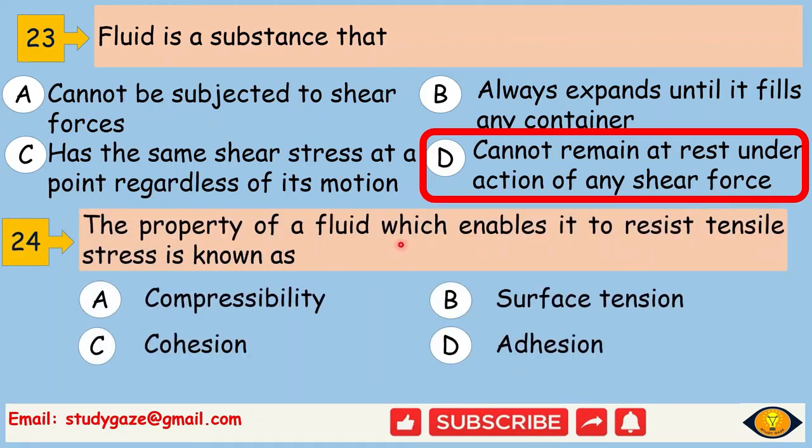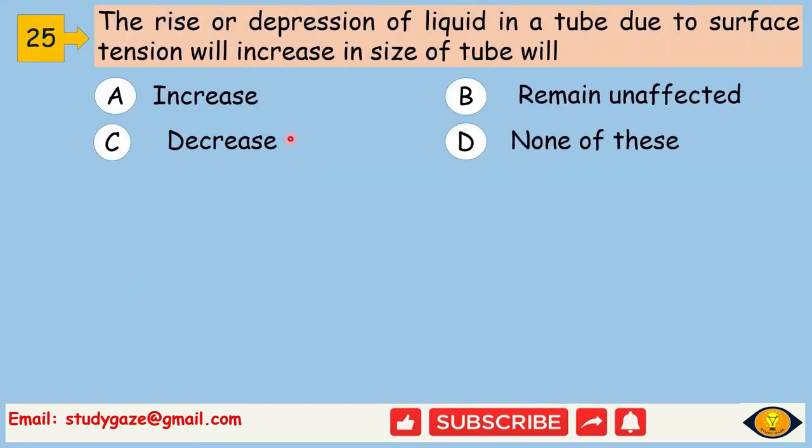The property of a fluid which enables it to resist tensile stress is known as cohesion. The rise or depression of liquid in a test tube due to surface tension will decrease with increase in size of tube.